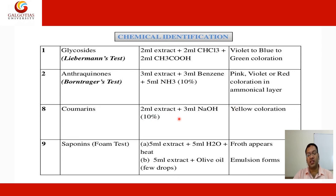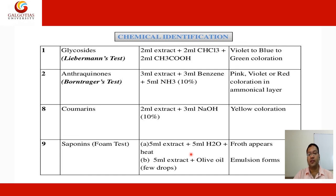Coumarin test: 2 ml of extract plus 2 ml of 10% sodium hydroxide — a yellow color is given. Saponin test (foam test): saponin gives foam, so 5 ml of extract plus 5 ml of water, then heat — froth appears, indicating the presence of saponin. A second saponin test: 5 ml of extract plus a few drops of olive oil — an emulsion forms, because oil and soap form an emulsion.